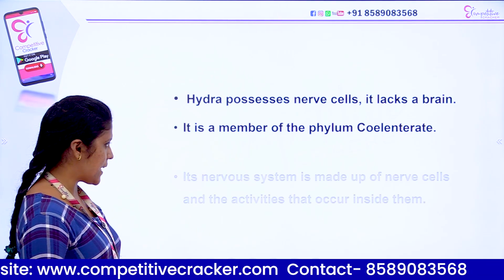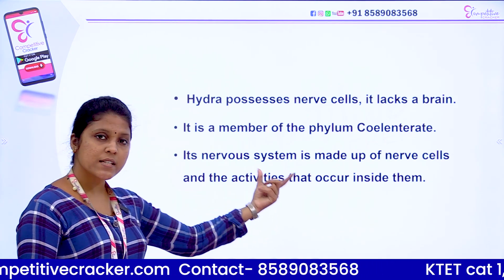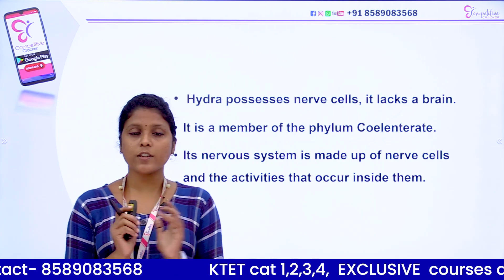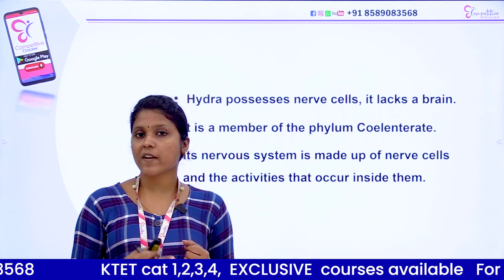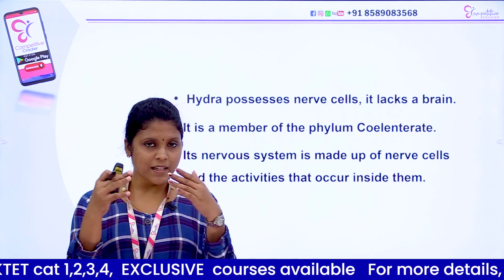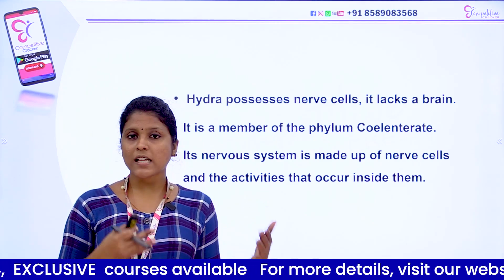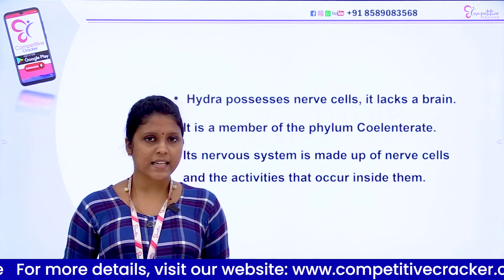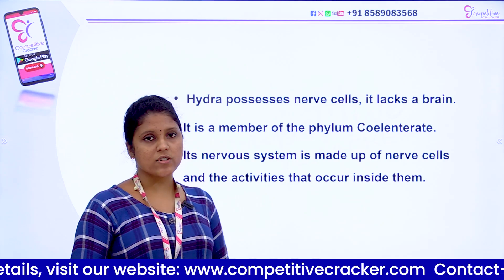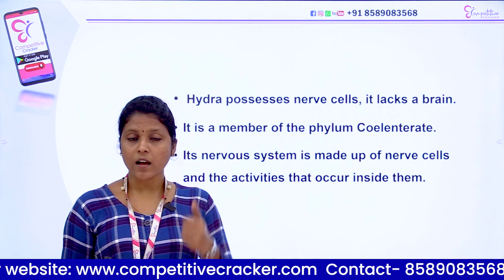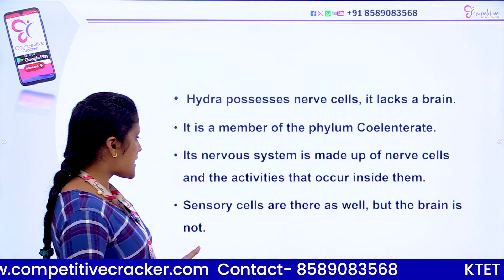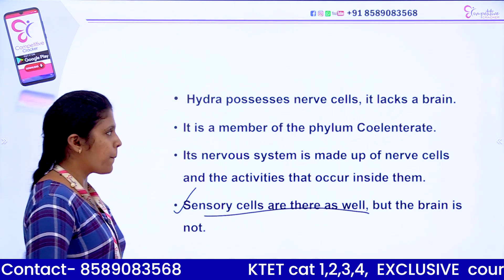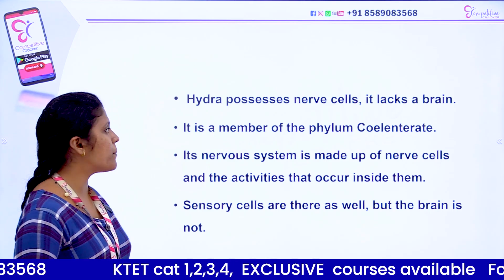Hydra has nervous cells but lacks a brain. The Coelenterata, otherwise termed as Cnidarians, have a nervous system made up of nerve cells and all activities take place through those nerve cells — but they do not have a brain. Lower organisms like Hydra have nerve cells and sensory cells, but the brain is not present.